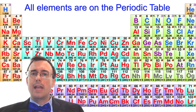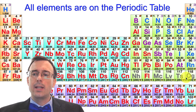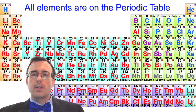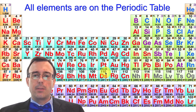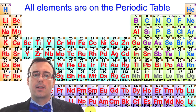Right now we have 118 different elements on the periodic table, and you can find the heaviest one, element 118, right down here. The atomic number of all the different elements is written right above the element symbol — this one is element 110. The atomic number indicates the number of protons that that particular element has.